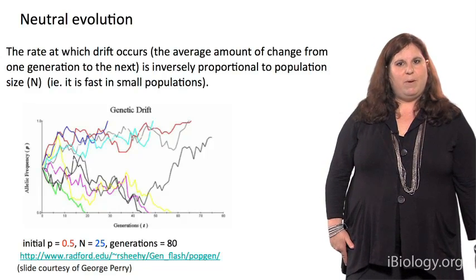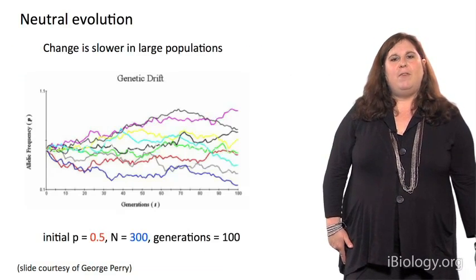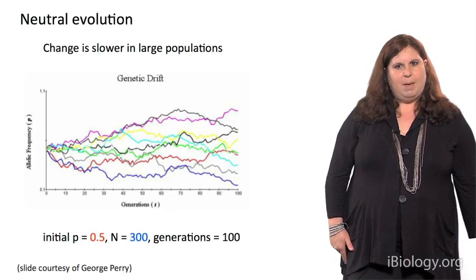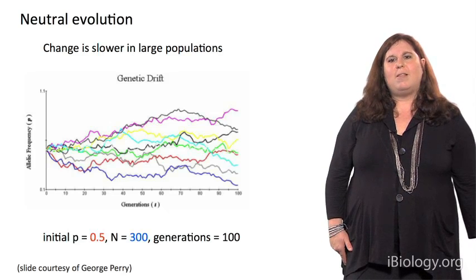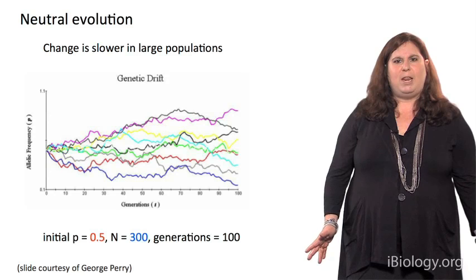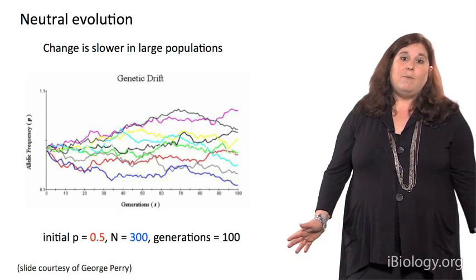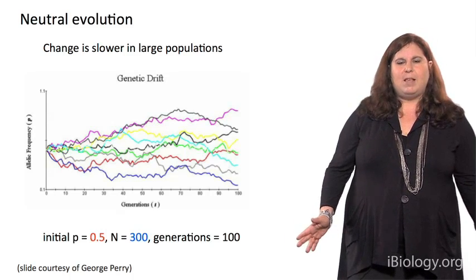In a small sample, it's going to be very rapid. But in this example, where we have a larger sample, now N equals 300, you can see that it just takes more time. There's not as much genetic drift occurring. Now, the end result is going to be the same, it just takes more time.